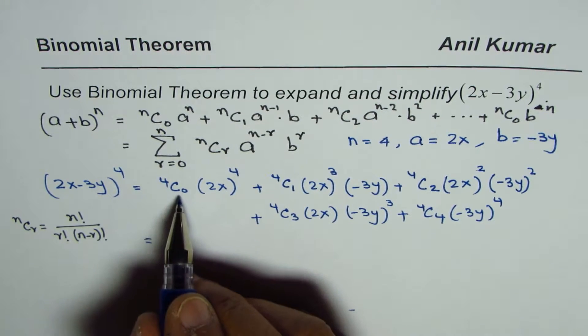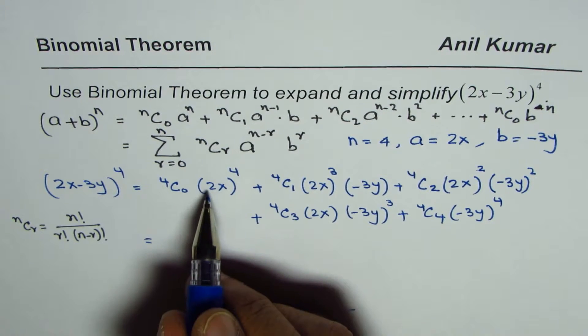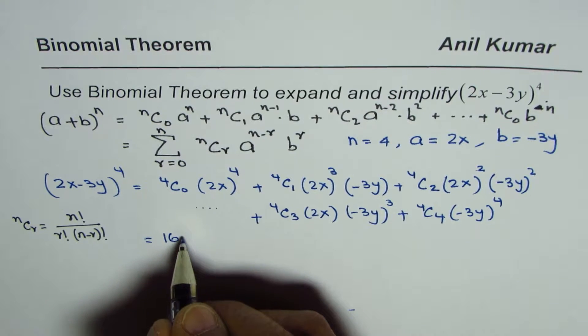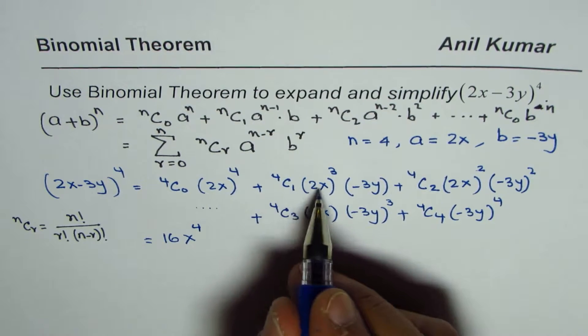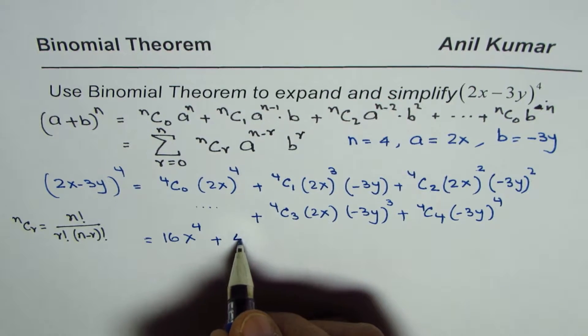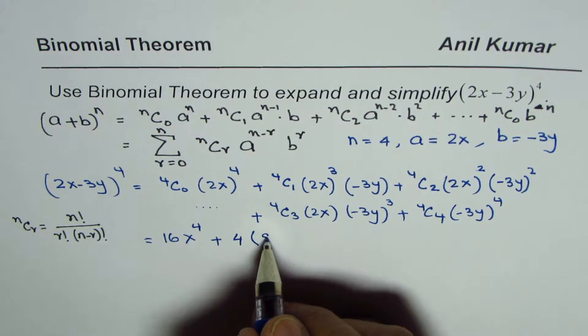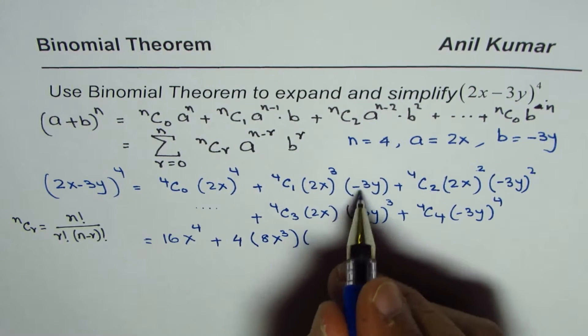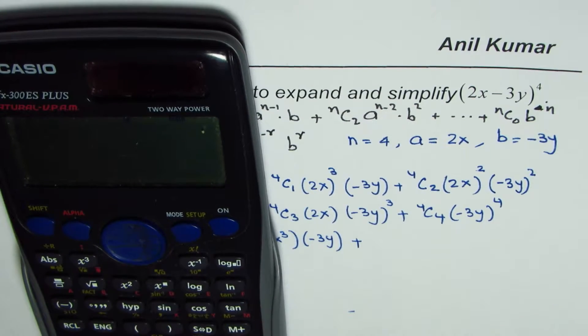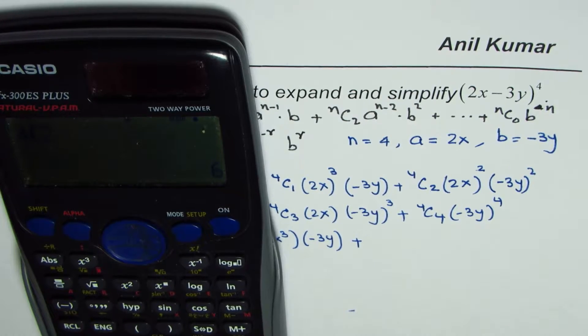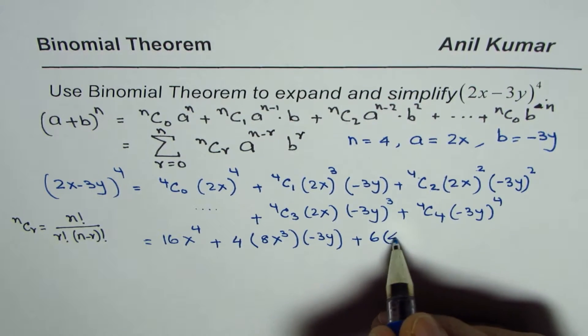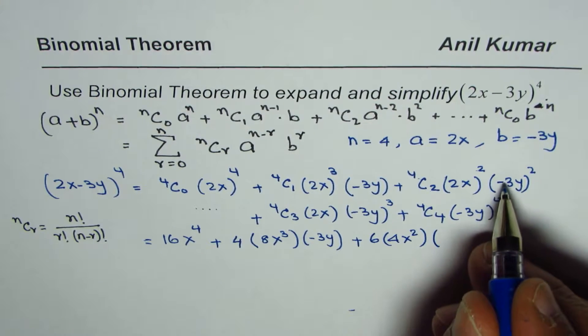Let us begin from the left side. 4C0 is 1, 2x to the power of 4. 2 to the power of 4, 2 times 2 is 4, 4 times 2 is 8 and 4 is 16. So we get 16x to the power of 4 from the first term. From the second term, 4C1 that is 4 and then we have, let me write 4 here for 4C1 times 2 cube is 8, so we get 8x cube times minus 3y. Next term, we have 4C2, so let us use the calculator to find 4C2, so 4 shift C2 equals to 6. You could use this formula also to get this answer. So we get 6, square of this term is 4x square and now square of this term is 9y square.